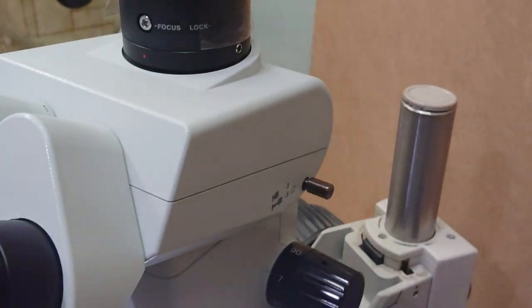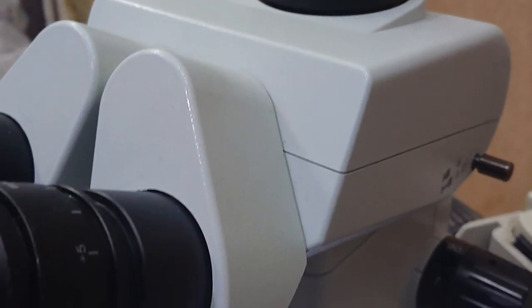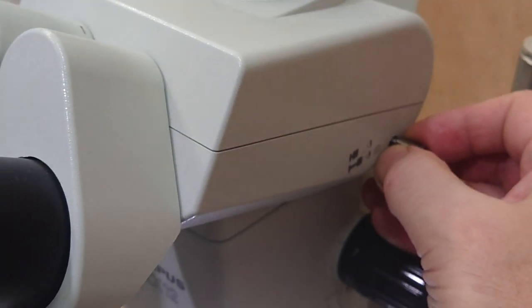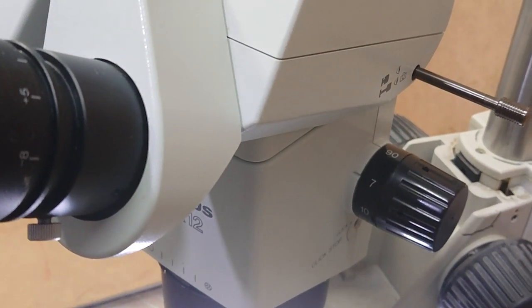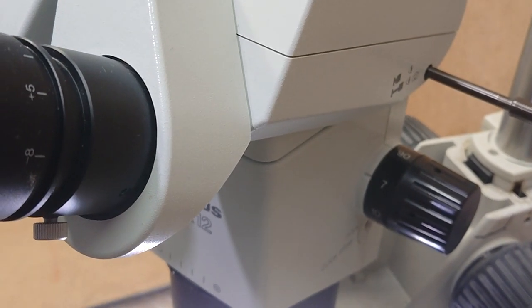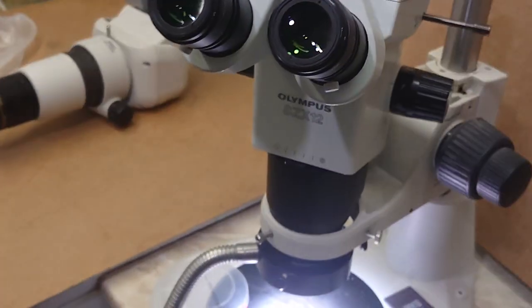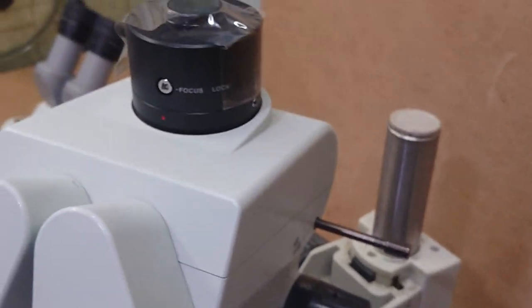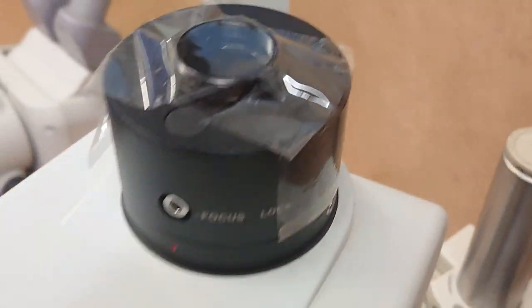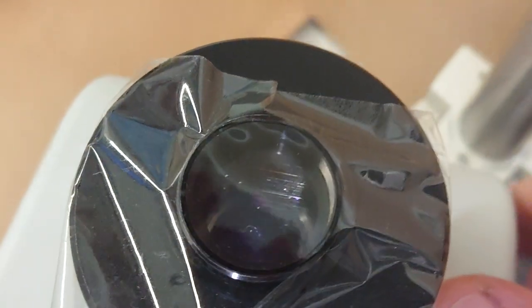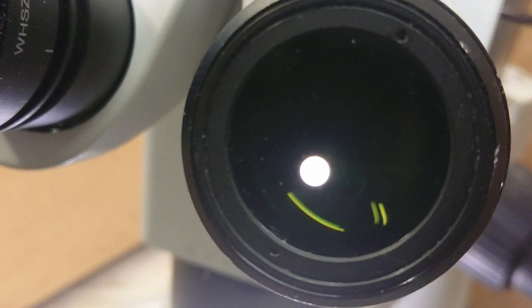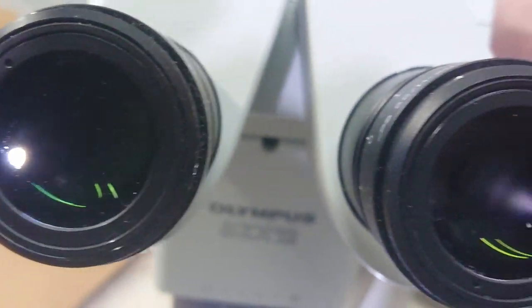In our case we have a trinocular head that has some controlling lever. When we pull it, we're making about 70 percent of all the picture go to the port while 30 percent are left for the eyepieces. So when we switch the port, nothing changes except the brightness. The picture is left on both channels.